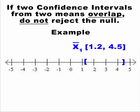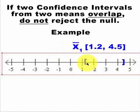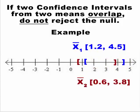Okay, let's say we have the first group mean and the confidence interval is between 1.2 and 4.5. We have a second mean and its confidence interval is between 0.6 and 3.8.